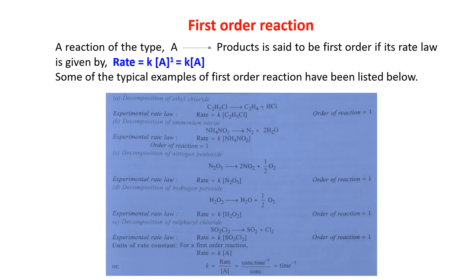When is a reaction called a first order reaction? A reaction of the type A → product is said to be first order if its rate law is given by: rate = K[A]^1, which can also be written as rate = K[A]. The unit of K for a first order reaction: since K = rate / [A] = (concentration · time⁻¹) / concentration, the concentrations cancel and K has units of time⁻¹.